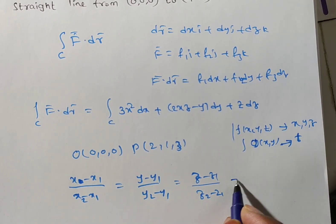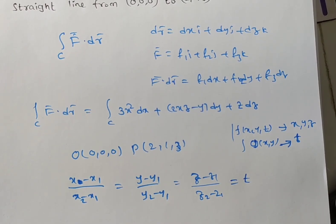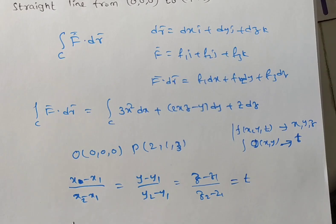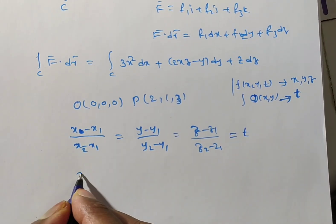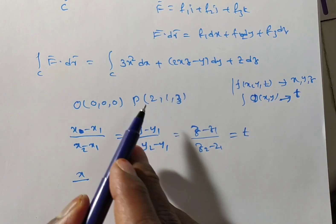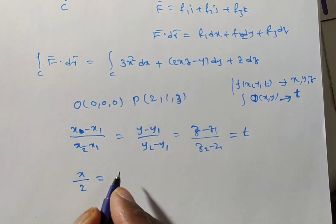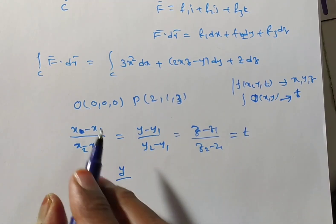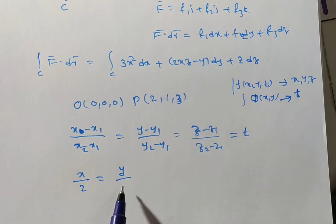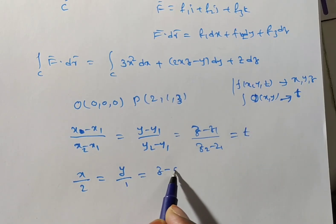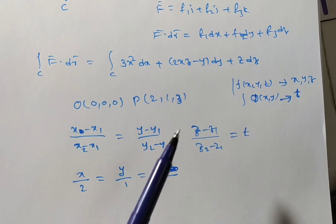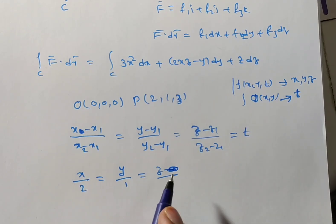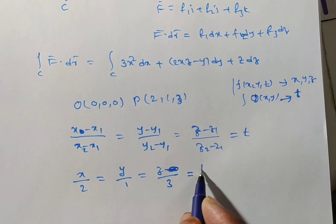This is the straight line equation. Then if you are substituted, we will have x1 is 0, so x minus 0 is x by x2 minus x1, 2 minus 0 is 2. This equals y minus 0 by 1 minus 0, that is 1, equals z by z2 minus z1, z2 is 3 minus 0, that is 3. This is equivalent to t.